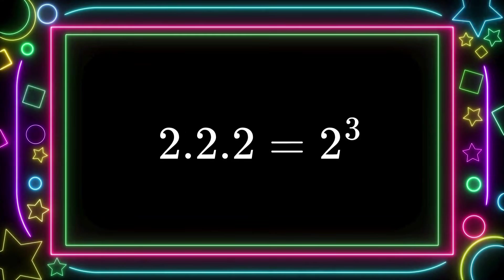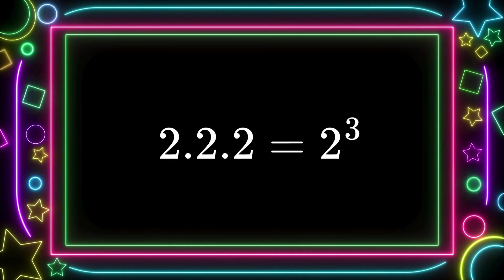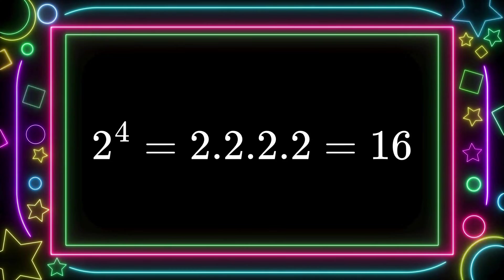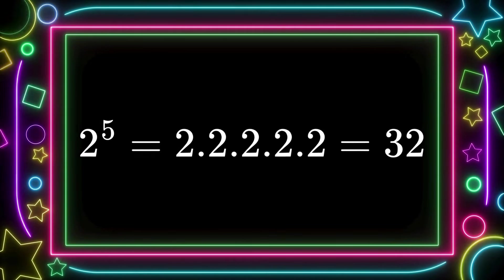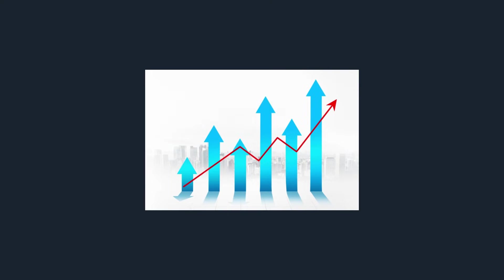When we multiply a number by itself repeatedly, such as 2 times 2 times 2, we call this raising a number to a power. In this example, we have 2 to the third power. Similarly, 2 to the fourth power equals 16, and 2 to the fifth power equals 32. This is better because we don't need to increase the number itself anymore, but rather its power.